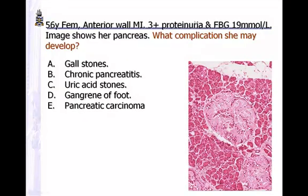56-year-old with anterolateral MI, proteinuria, high glucose — this shows the pancreas. Typical features of diabetes with complications. What we are seeing here are the pink deposits within the islets of Langerhans — the endocrine pancreas. Few cells are intact, but the remaining tissue is all pink substance — the typical appearance of beta cell exhaustion replaced by beta amyloid.